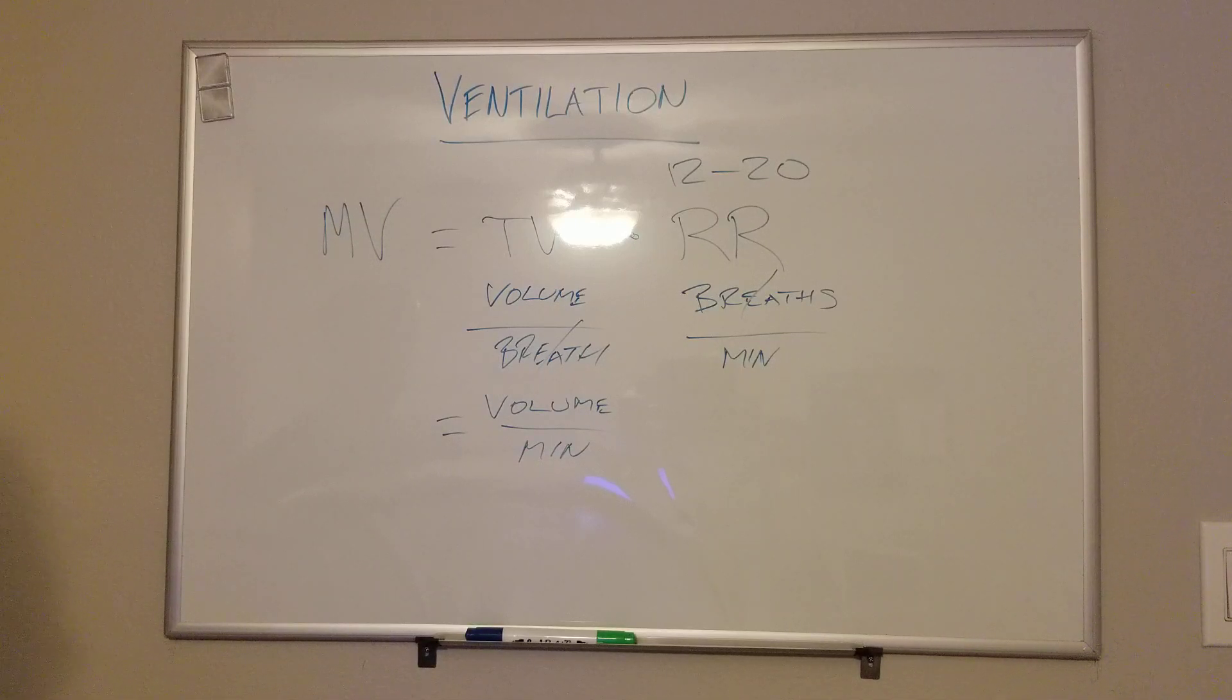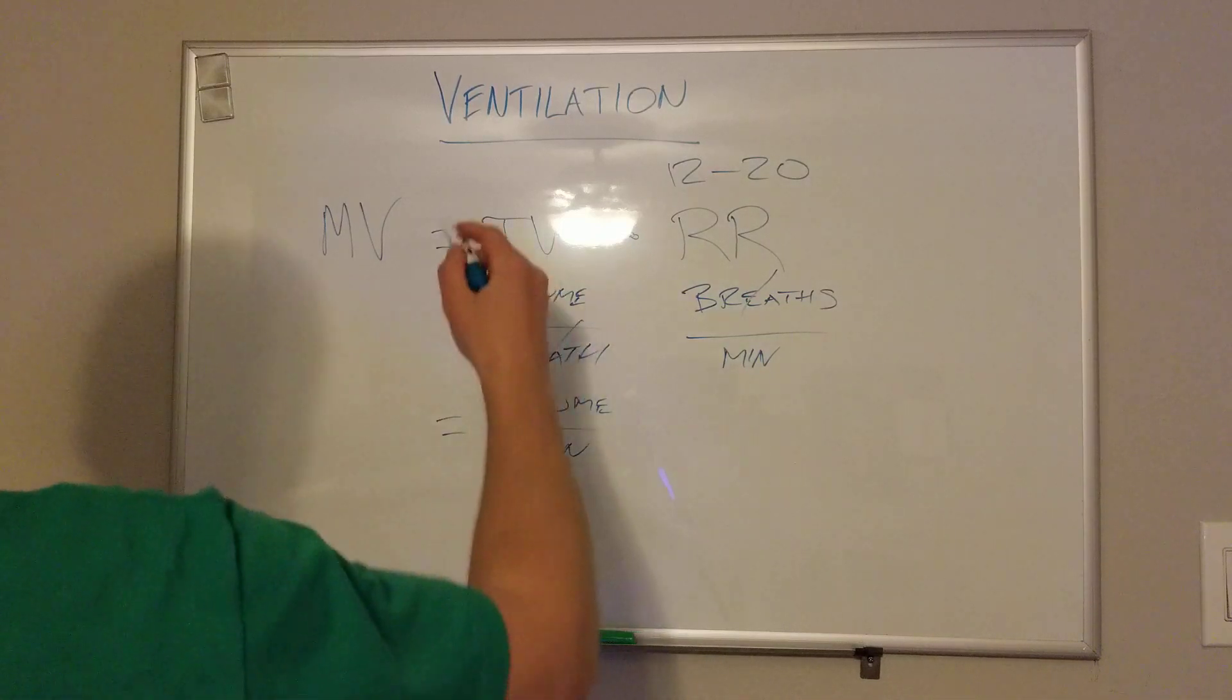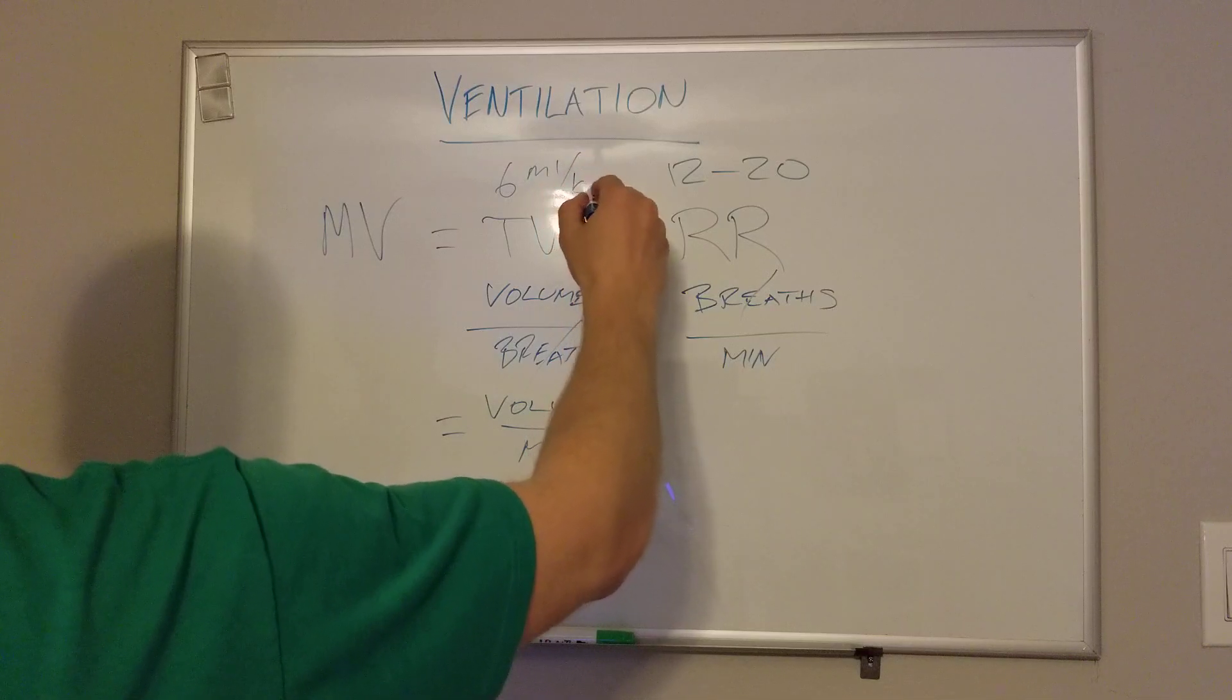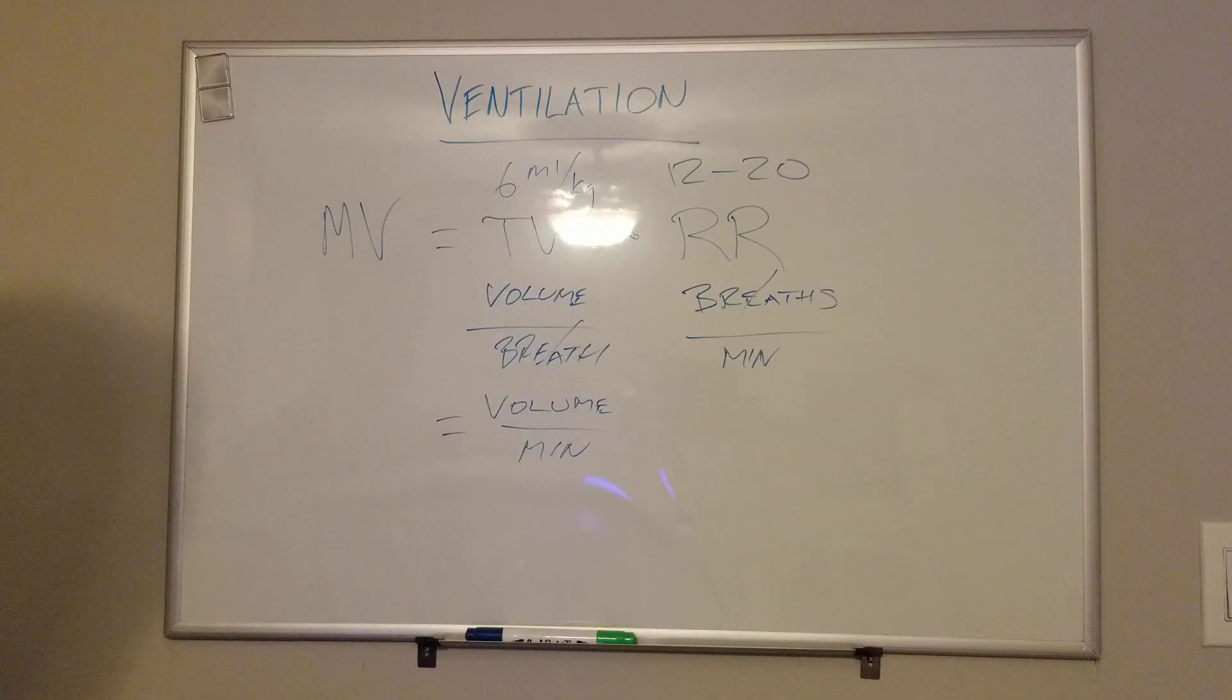The calculation is based on ideal body weight, which we actually have a different video on if you want to check it out. But usually what I tell people is six milliliters per kilogram of ideal body weight. So even if someone weighs 300 kilos, it doesn't necessarily increase their lung volumes, not to amount that we would use in this equation for clinical significance. In any case, six mils of tidal volume per kilogram of ideal body weight.